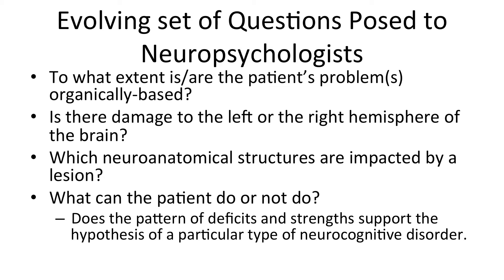Knowing whether a lesion is in the left or right hemisphere is especially important when dealing with something like pending epilepsy surgery. Another question is: which neuroanatomical structures are impacted by a lesion? Lesions to certain parts of the brain often cause specific deficits. For example, lesions to the motor strip typically cause difficulties in movement on the other side of the body. A lesion to the left frontal lobe can cause difficulties producing language. There are fascinating case studies in the literature of even small lesions causing significant problems.